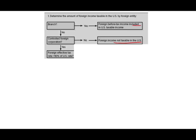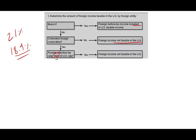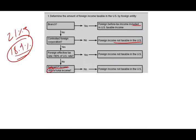If it was a controlled foreign corporation, then we have to ask: what is the effective tax rate? The corporate tax rate we are using in the US is 21%. There is a safe harbor rule, which is 90% of 21%, equaling 18.9%. If the controlled foreign corporation is paying more than 18.9% — more than 90% of the US tax rate — then the foreign income is not taxable in the US because they're paying enough taxes. If the effective rate is less than 18.9% and it's a controlled foreign corporation, then we have to determine whether they have subchapter F income.